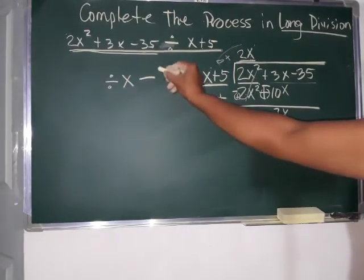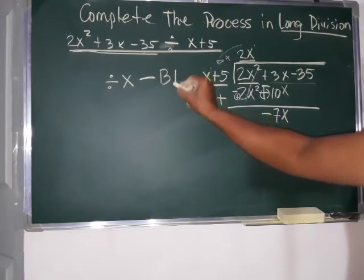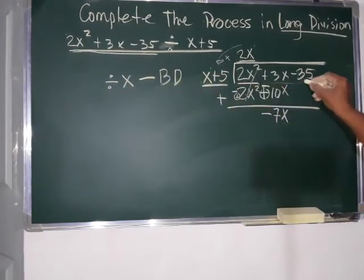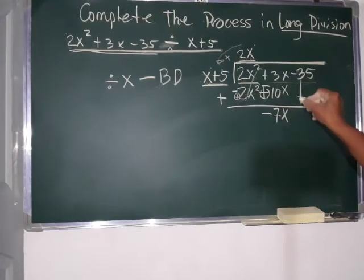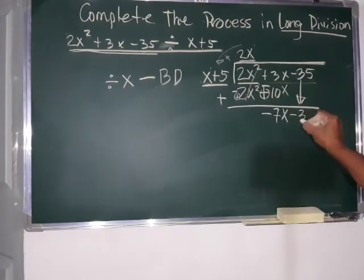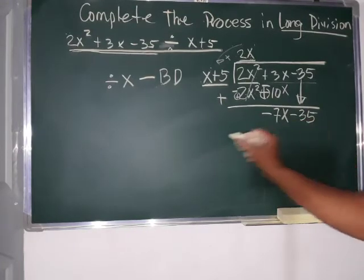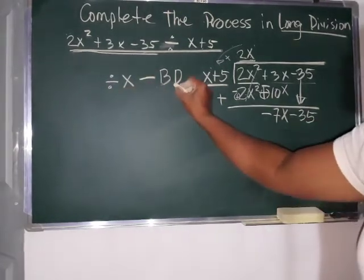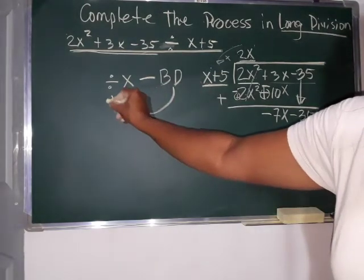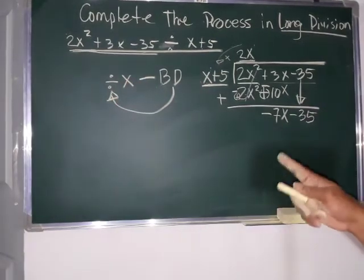Next. After subtracting, bring down. BD means bring down. Bring down, negative 35. Then, cycle lang siya. Proceed again to division. So, after this, proceed again to division. So, magdivide na naman tayo.